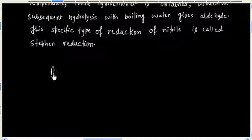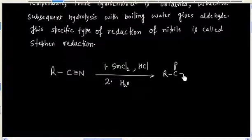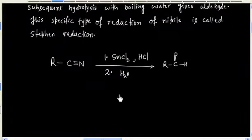So if I have a nitrile R-CN, and this is treated with SnCl2 and HCl, and then hydrolysis with boiling water, finally aldehyde is obtained.